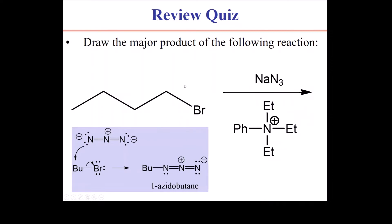The reason that this review quiz showed up was to review the concept of phase transfer catalysts. If you were confused wondering what this does in the reaction, its purpose is to carry the azide ion from an aqueous solvent to the butyl bromide, which would be dissolved in an organic solvent. So this reviews the concept of phase transfer catalysts.